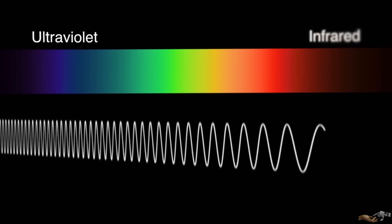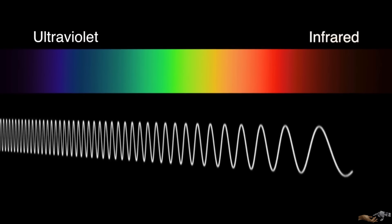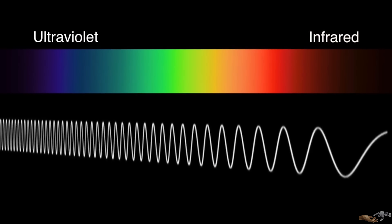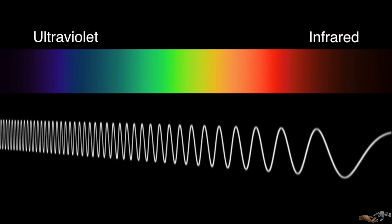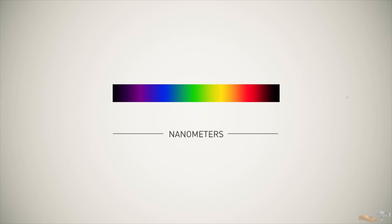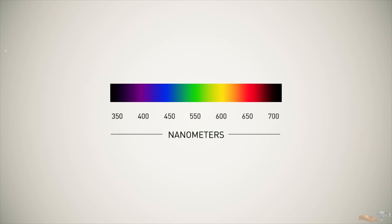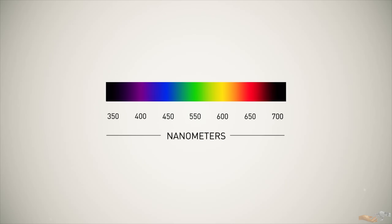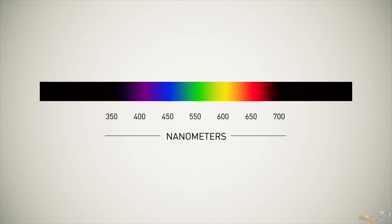Unlike the longer infrared wavelengths needed for long distance communication to avoid signal degradation, the light used for computation will be in the visible part of the electromagnetic spectrum, with wavelengths in the range of 450 to 700 nanometers. This is because when working with small scale distances, signal degradation isn't an issue, but computing speed is.